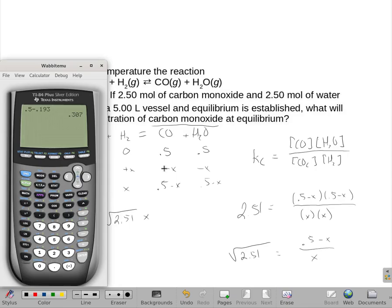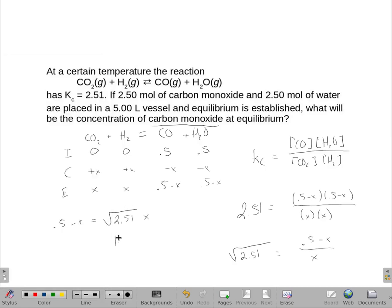Now I have to do a little bit of math, so what is the square root of 2.51? That is 1.58. I'll go ahead and do 1.584. And we're going to combine like terms. So I'm going to move this x over here. So we have 0.5 equals 2.584 x, because that was 1x.